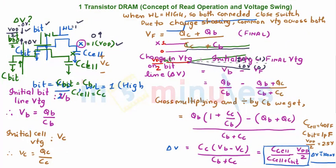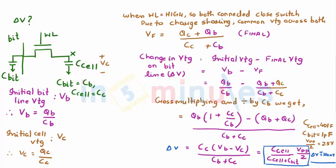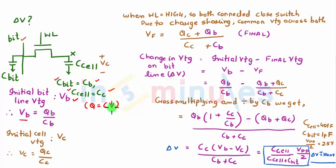Let's find the value of delta V — it's simple mathematics, not important from the examination point of view but very important for understanding. Let the initial voltage on the bit line be V_B, and represent C_bit as C_B and C_cell as C_C. We know Q = CV, so V_B = Q_B / C_B, where Q_B is the charge on the bit line. Similarly, the initial cell voltage V_C = Q_C / C_C.